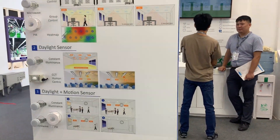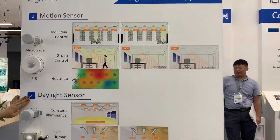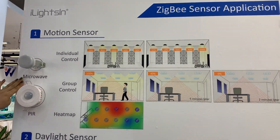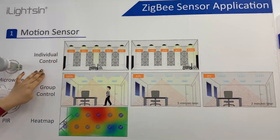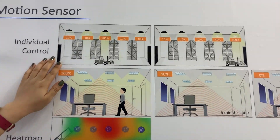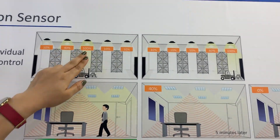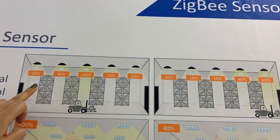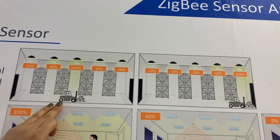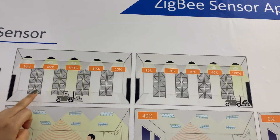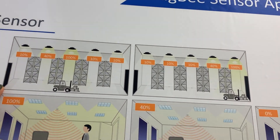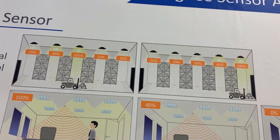We have a full range of Zigbee sensors, including a motion sensor and a daylight sensor. For industrial applications, we recommend the microwave motion sensor. One sensor can control an individual lamp or a group of lamps. It uses a three-step dimming solution: task level, waiting level, and background level. When the sensor detects someone or a vehicle, the light goes to task level. After a period with no detection, it drops to waiting level at 40%, and with continued no detection, it goes to background level at 10%.